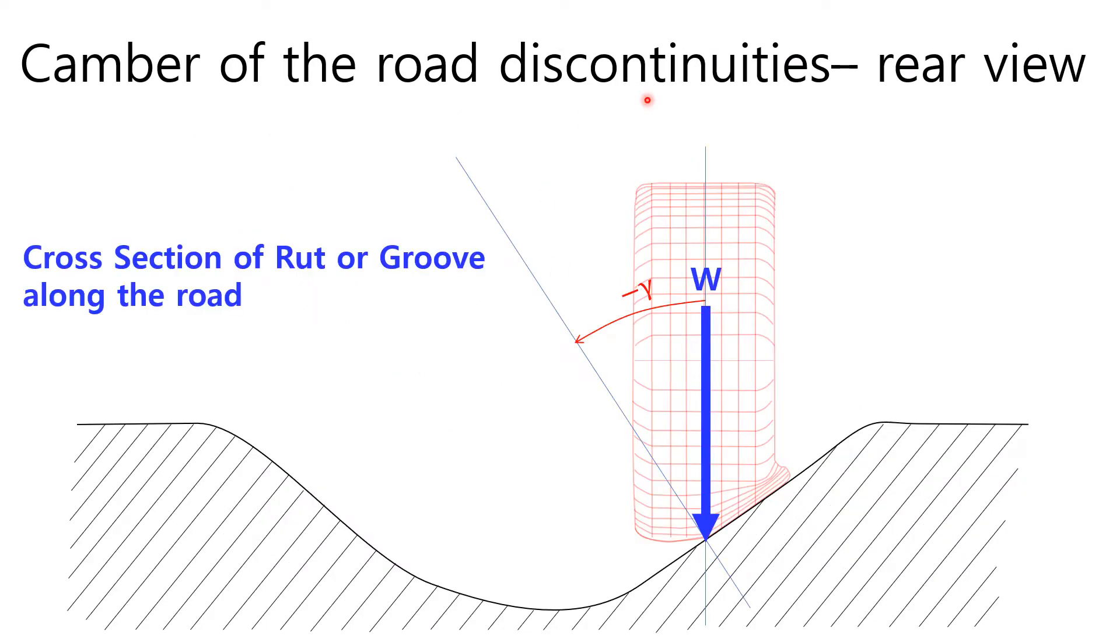Let's think about the camber of the road discontinuities for the front left tire in the rear view. This picture describes the cross-section of rut or groove along the road. The value of the camber stiffness is important in the road discontinuities along the road having a transversal slope, while the vertically loaded tire maintains its mid-plane to meet that slope of a rut surface.